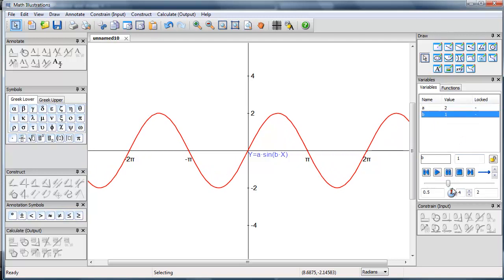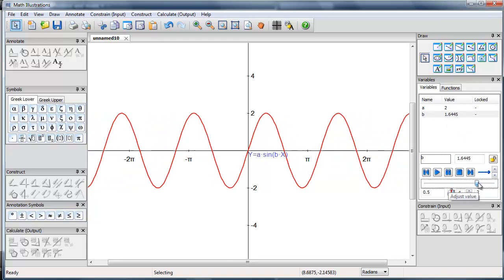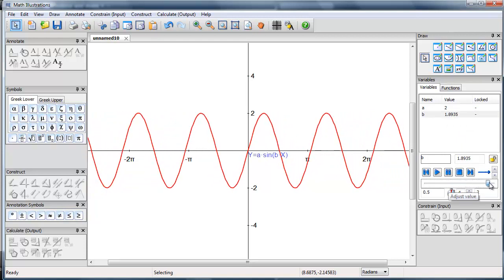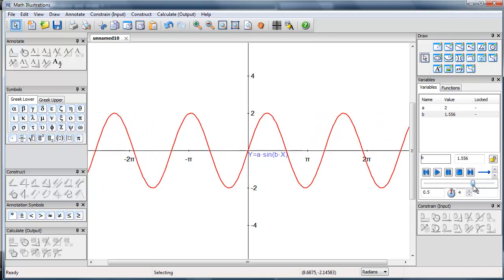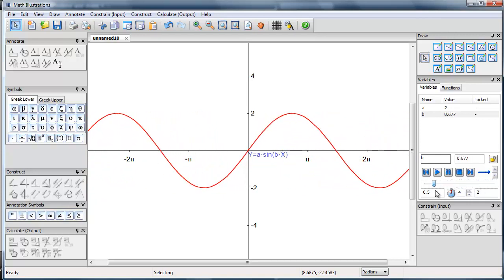And I can see what happens if I change b. If I make b bigger, then my frequency gets bigger, my period gets smaller, and vice versa if I reduce the size of b.